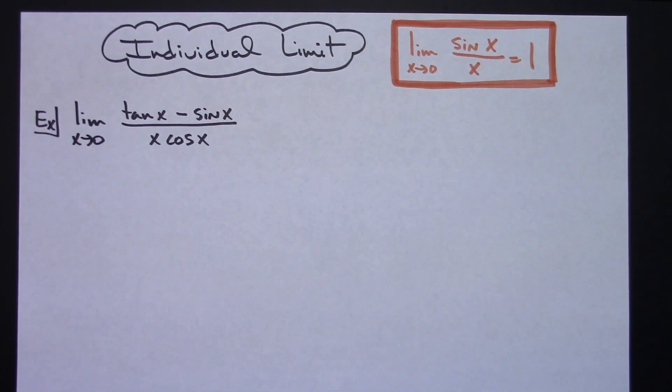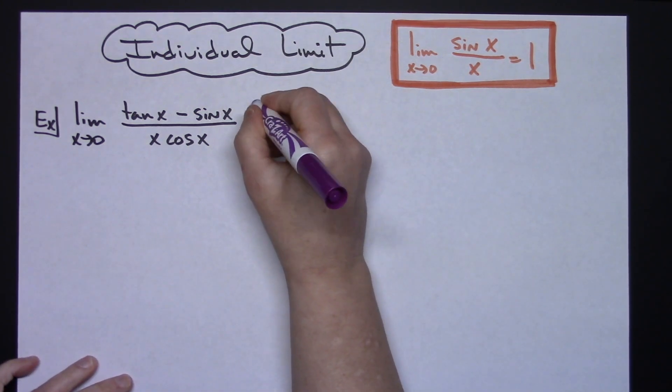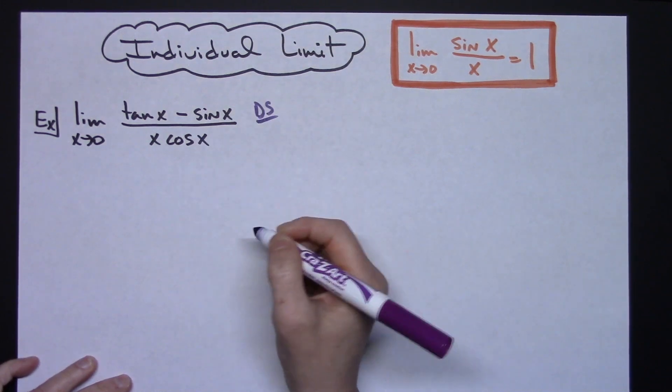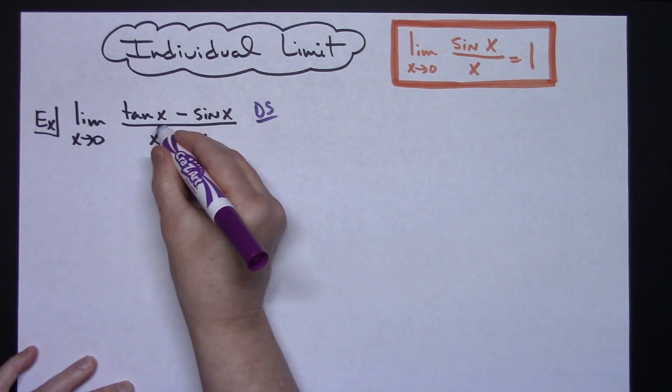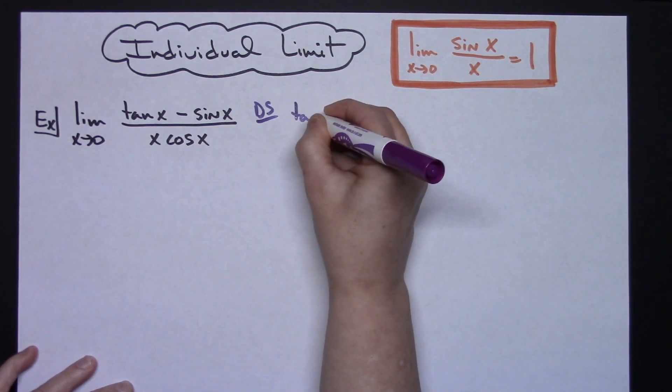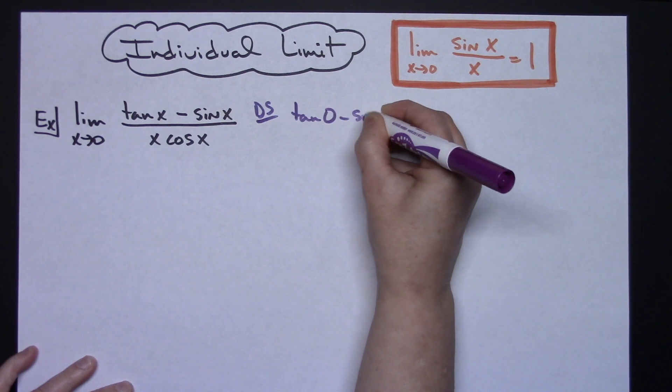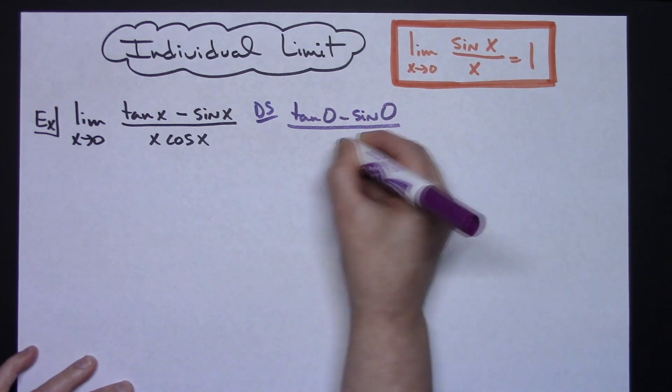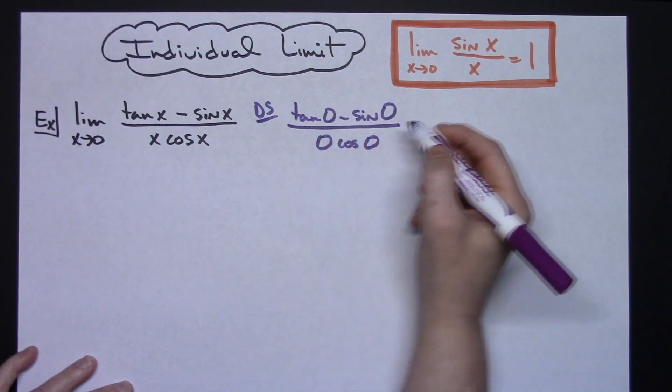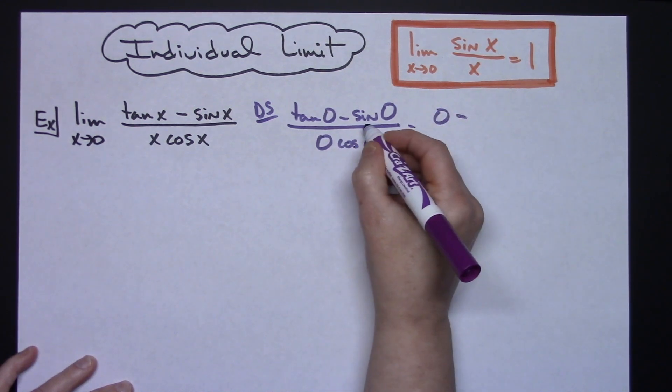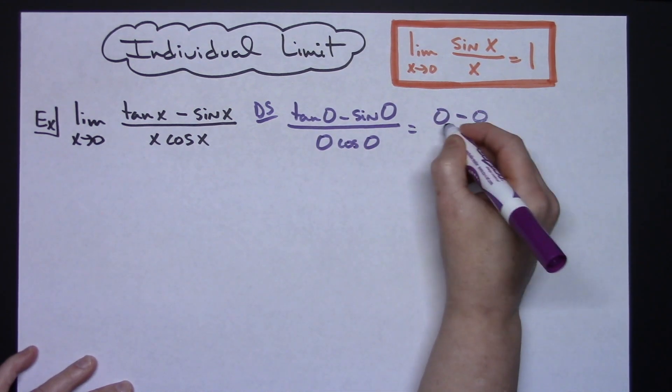First I'm going to do direct substitution just to make sure I have an indeterminate form. Plugging 0 in gives me tangent of 0 minus sine of 0 all over 0 times cosine of 0. Tangent of 0 is 0, sine of 0 is also 0.